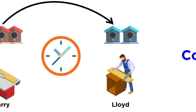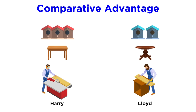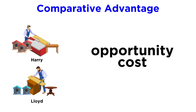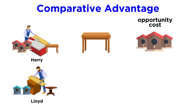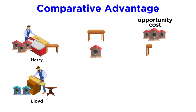Now let's look more closely at comparative advantage with the same example. Harry can make three birdhouses or one table; Lloyd can make two birdhouses or one table. For comparative advantage, we need to figure out what makes more sense for Harry and Lloyd to produce. In order to do that, it is useful to compare opportunity costs. Harry sacrifices three birdhouses for every table he produces, so the opportunity cost of making one table is three birdhouses — the three birdhouses he could have built in the time it takes him to build one table. And the opportunity cost of making one birdhouse is one third of a table.